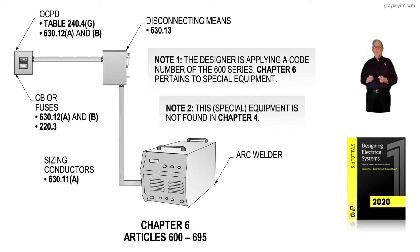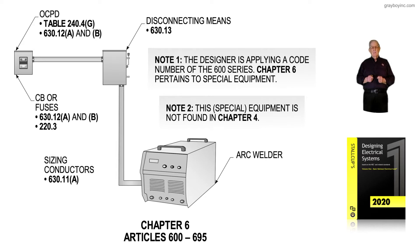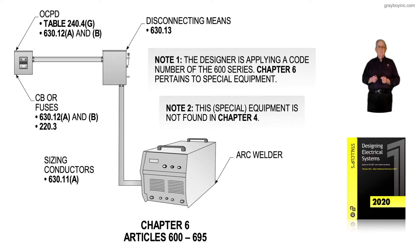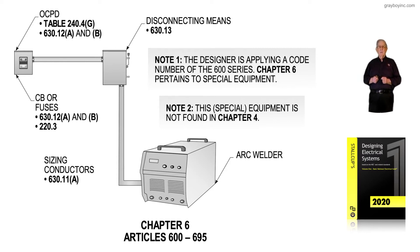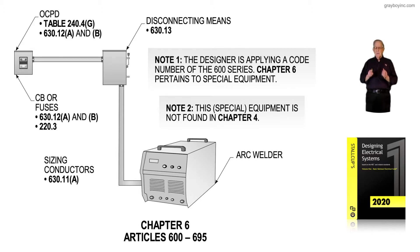This illustration deals with Chapter 6, the 600 series, including articles 600 through 695. Notice illustrated is a welder, and note 1 says the designer is applying a code number of the 600 series, Chapter 6. It pertains to special equipment.